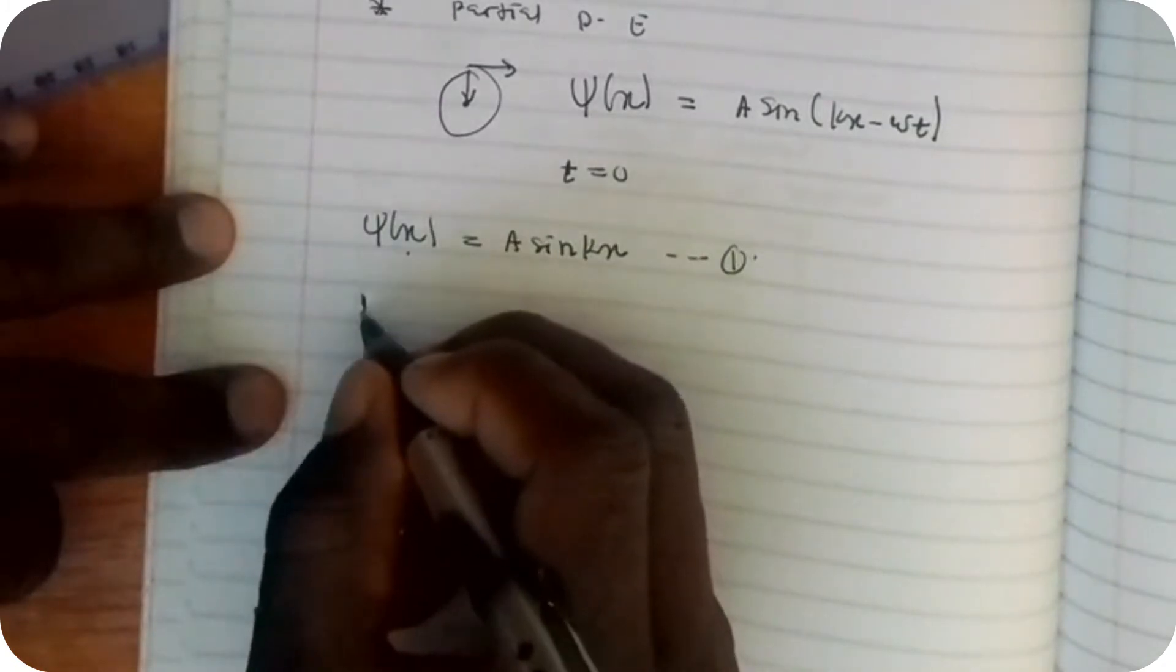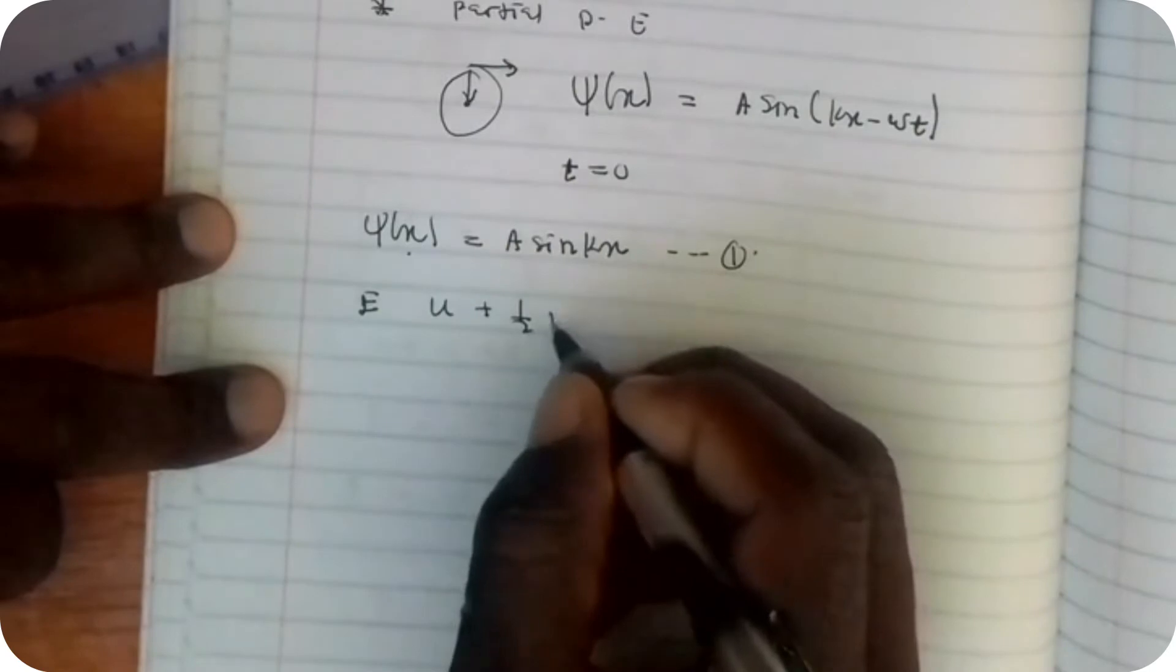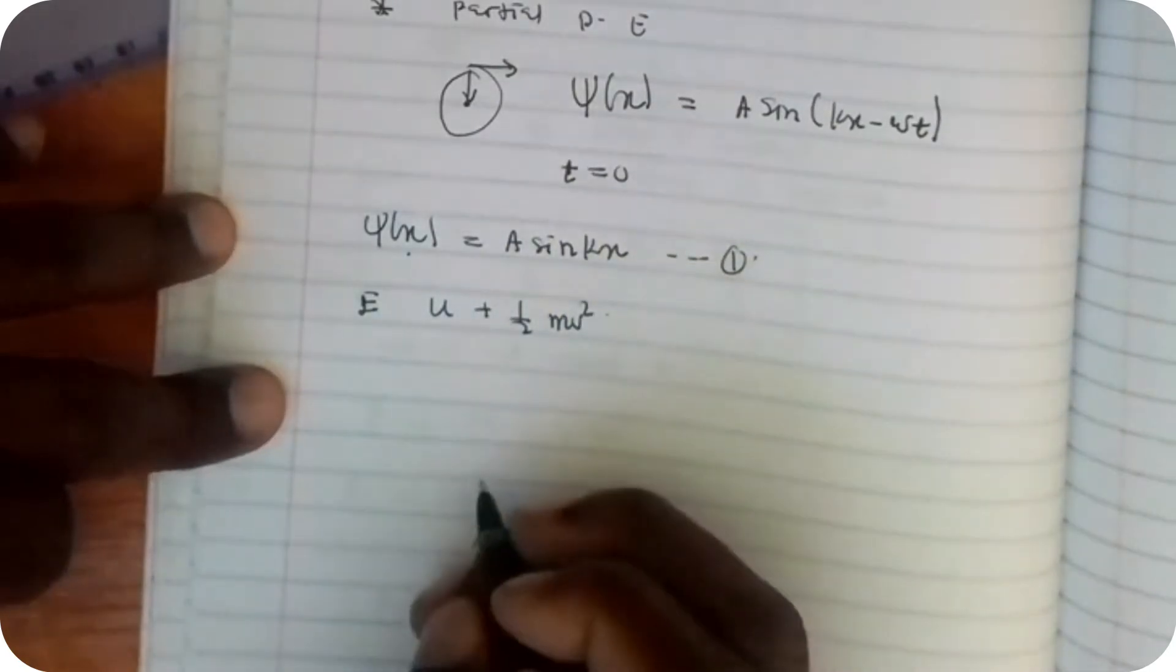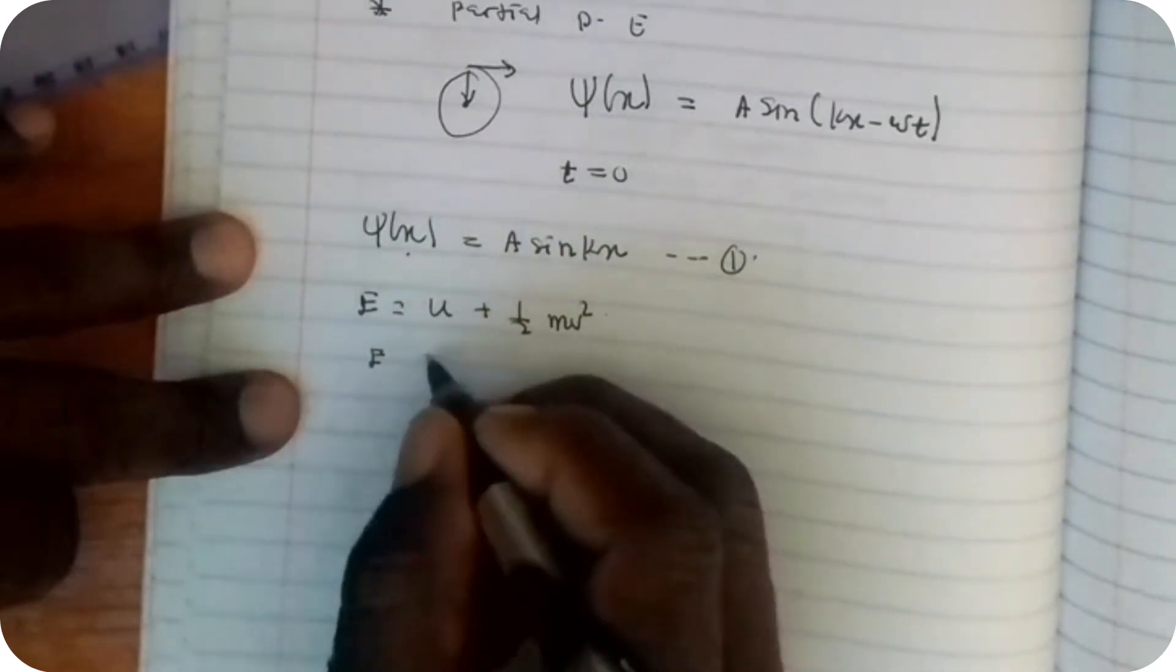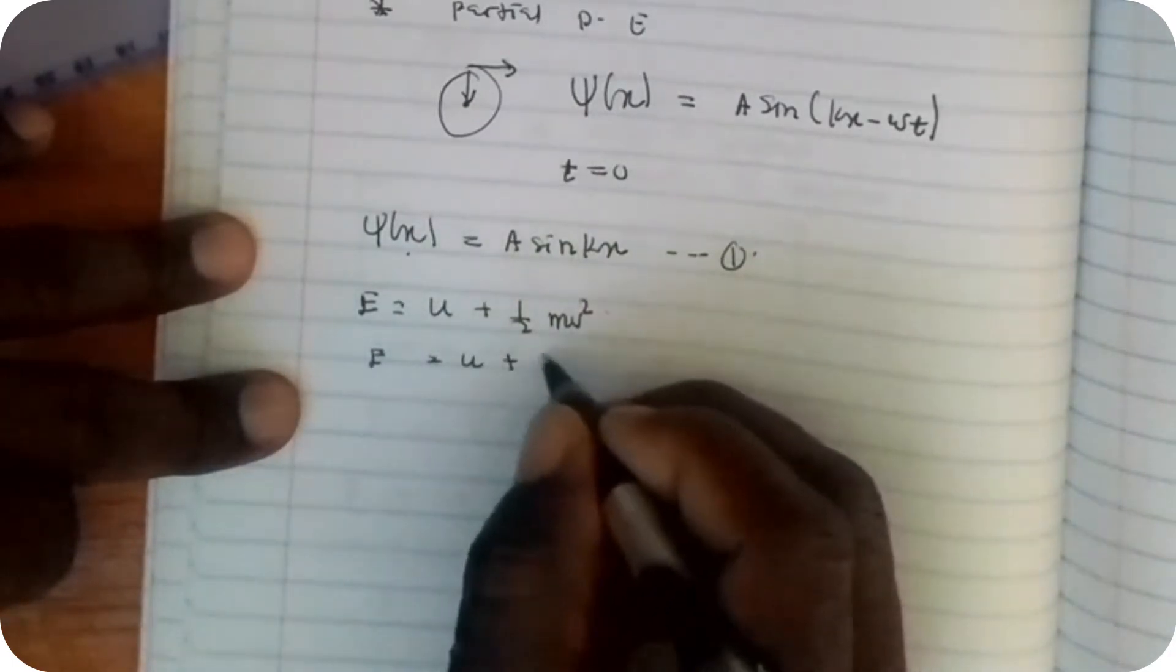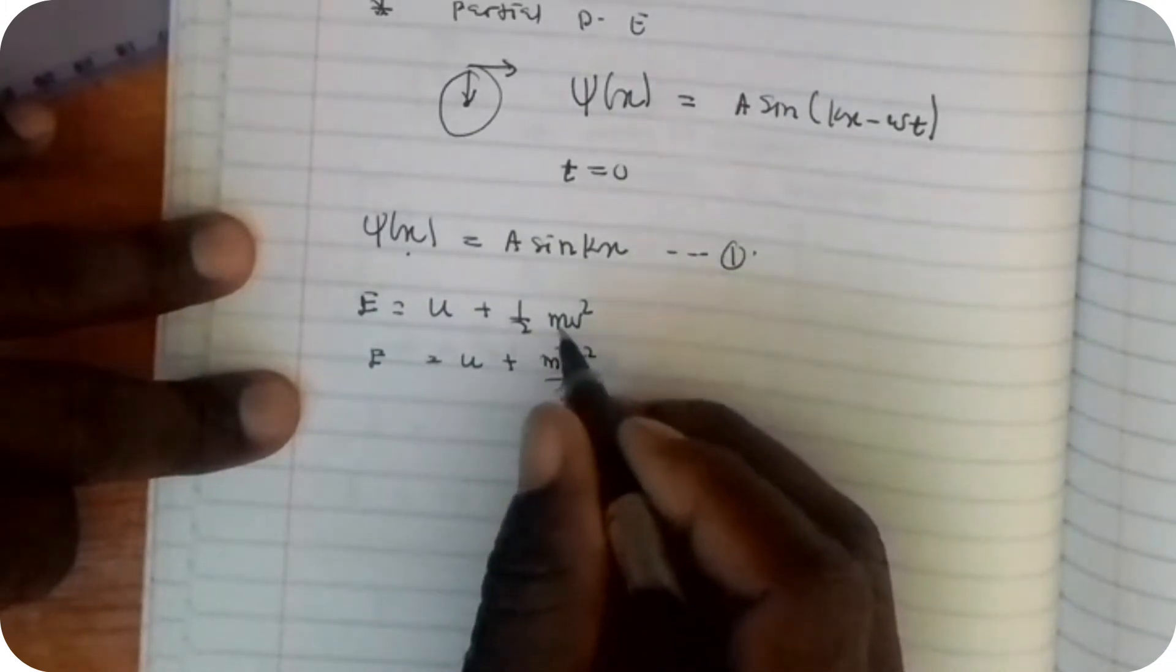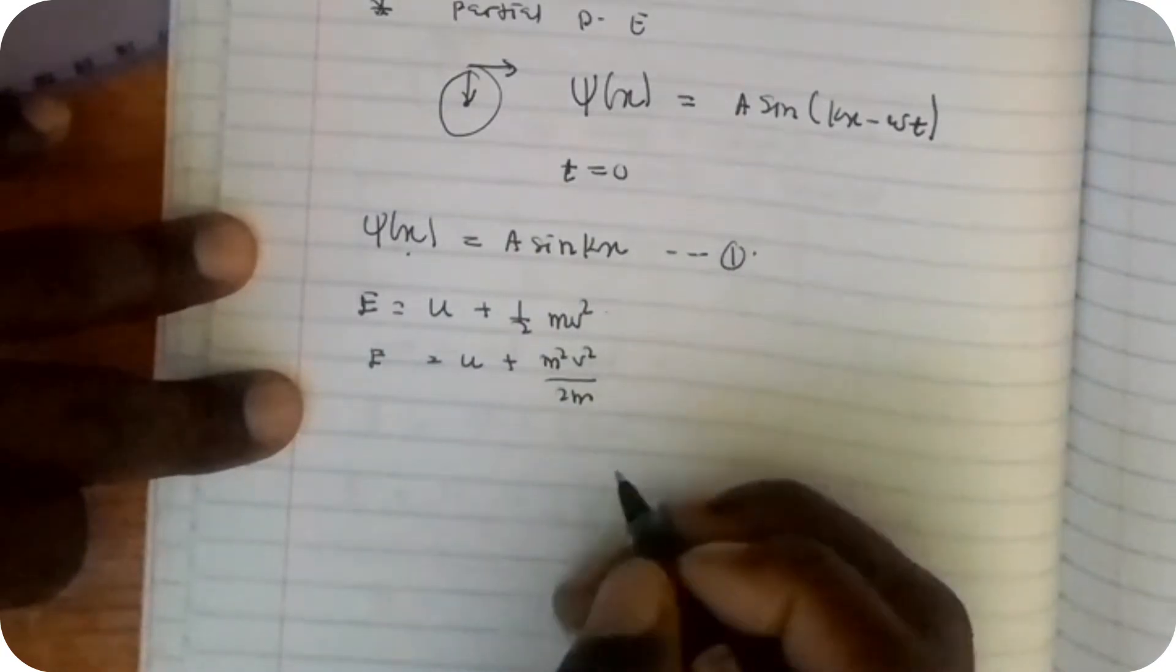The energy of a system is given by E equals U plus ½mv², which is potential energy and kinetic energy. This is also written as E equals U plus m²v²/2m. We've just introduced another m here and divided by another m here.